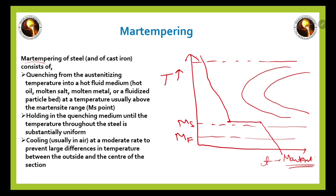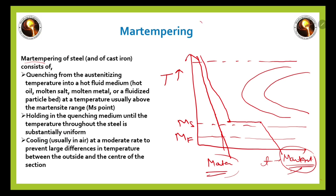The difference between this martensite structure from martempering and the martensite obtained by cooling rapidly all the way to room temperature is that in martempering you also get some ductility and lower residual stresses. That is why martempering treatment is very useful for steel and cast iron.